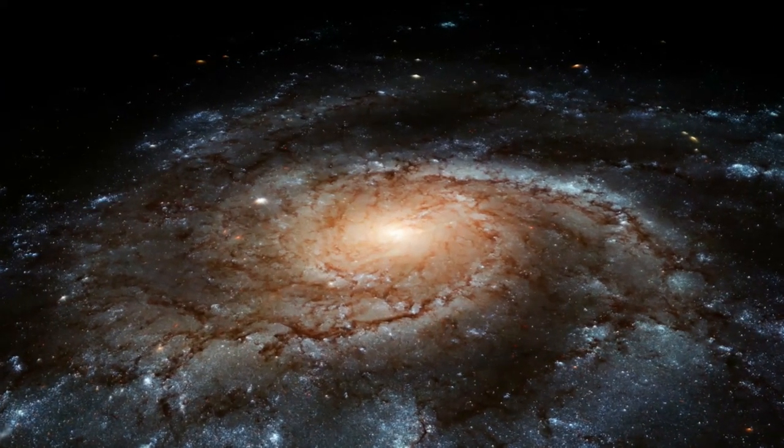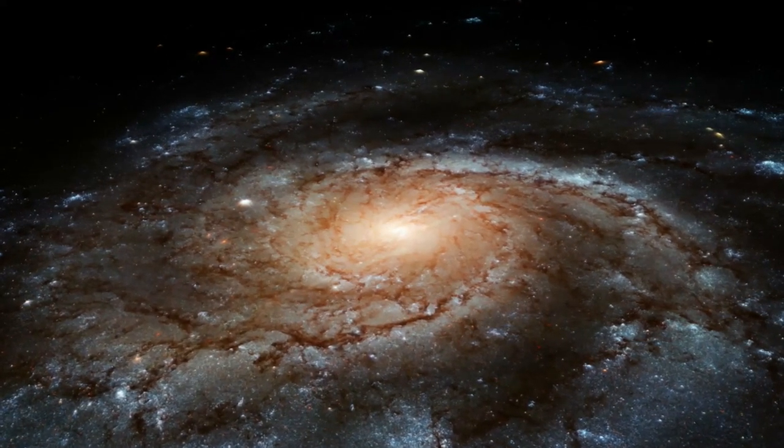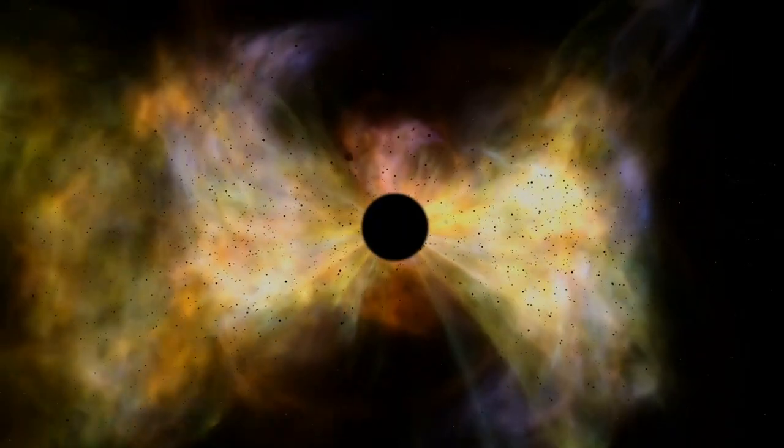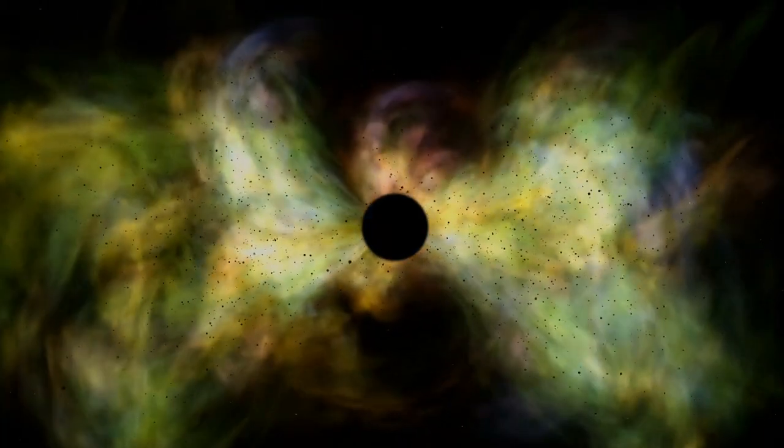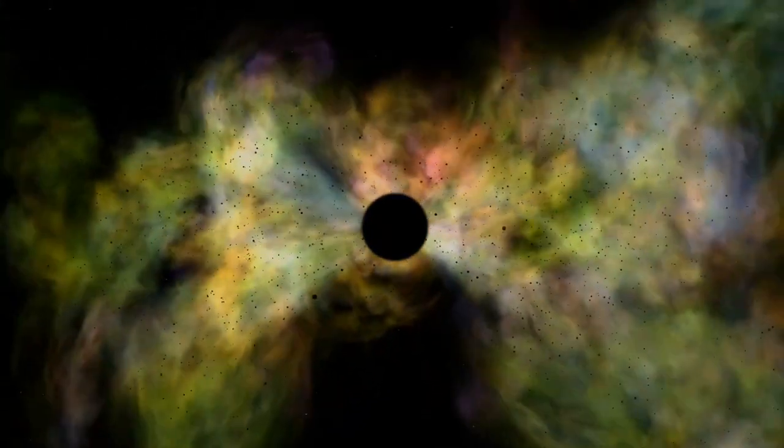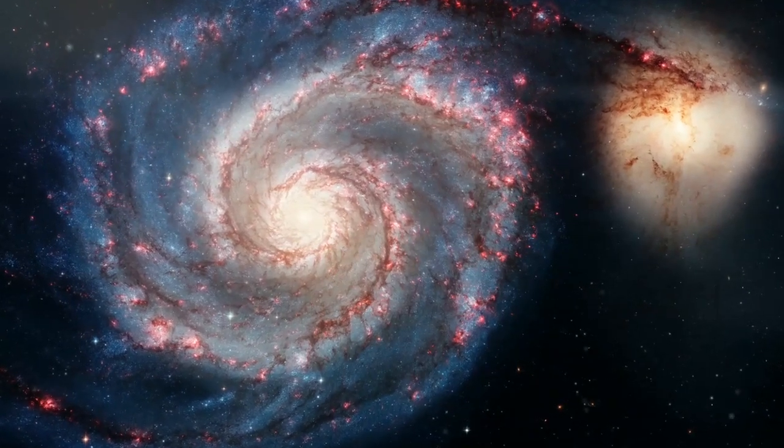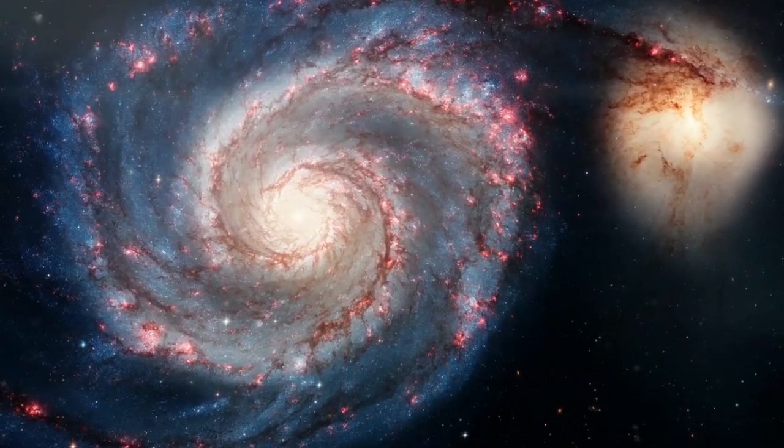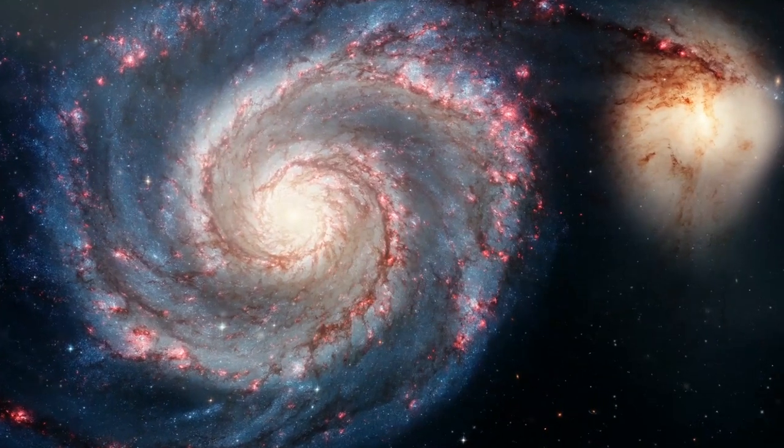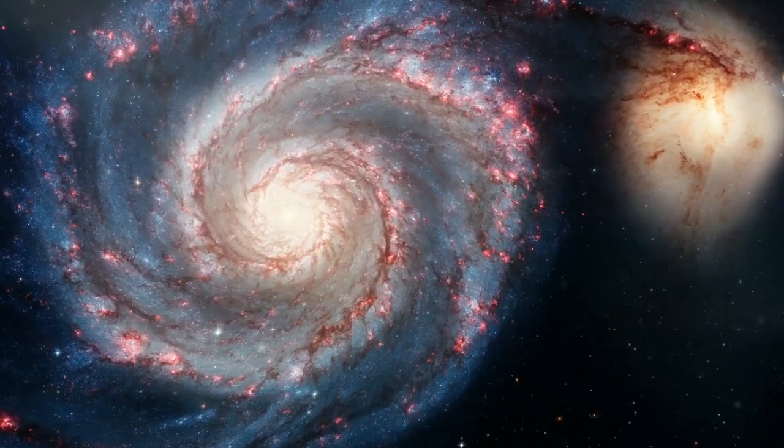Scientists can't see black holes the way they can see stars and other objects in space. Instead, astronomers must rely on detecting the radiation black holes emit as dust and gas are drawn into the dense creatures. But supermassive black holes, lying in the center of a galaxy, may become shrouded by the thick dust and gas around them, which can block the telltale emissions.